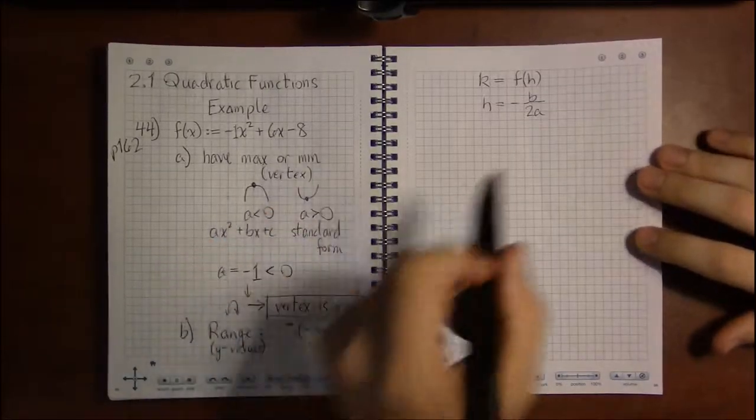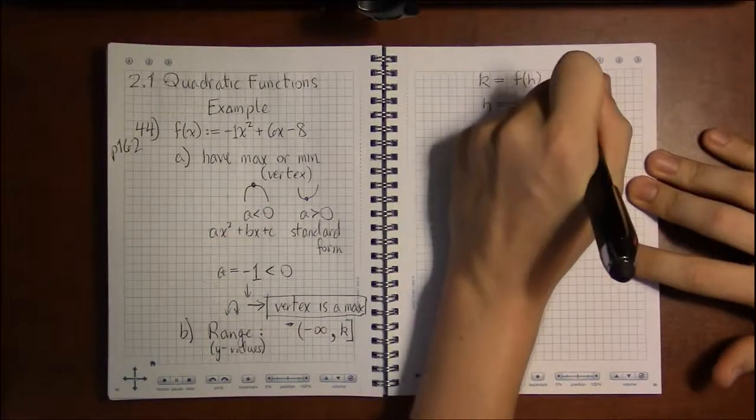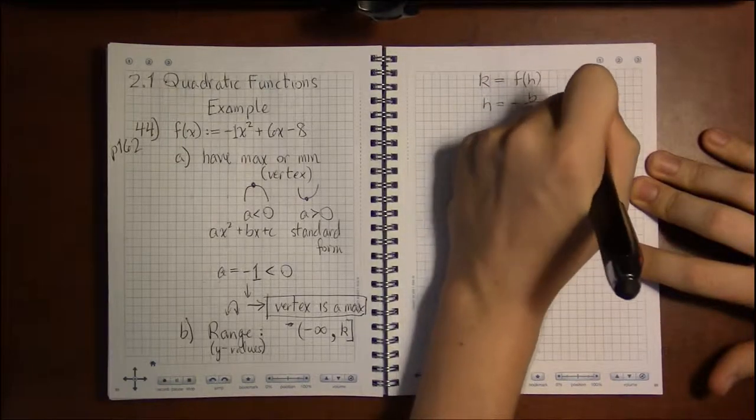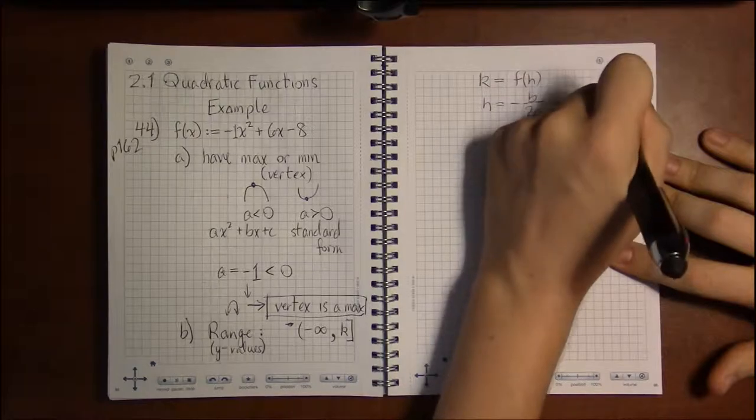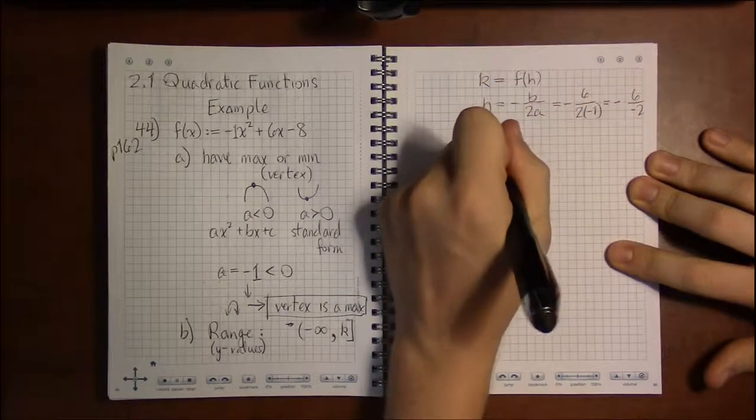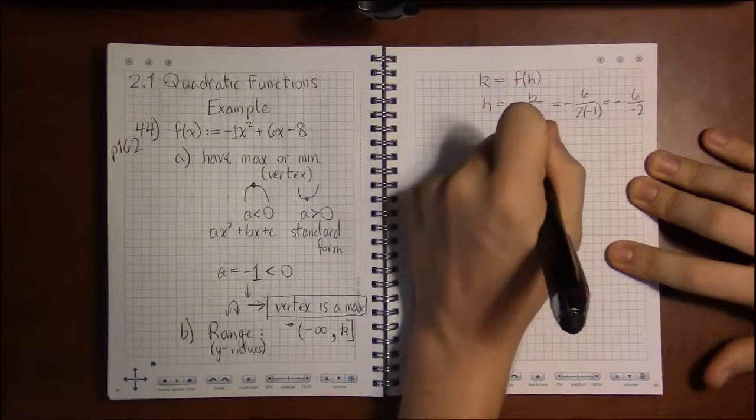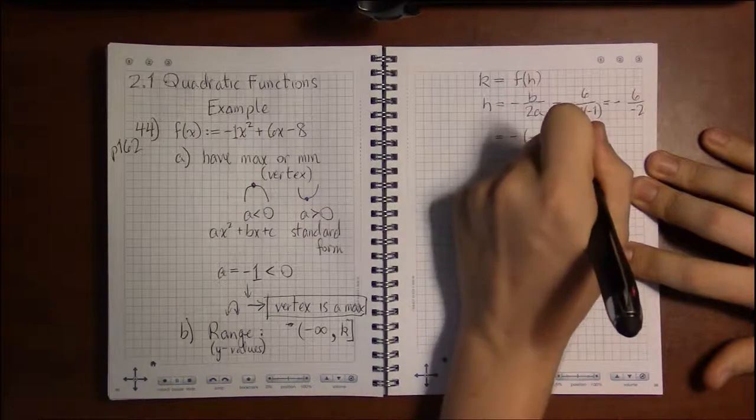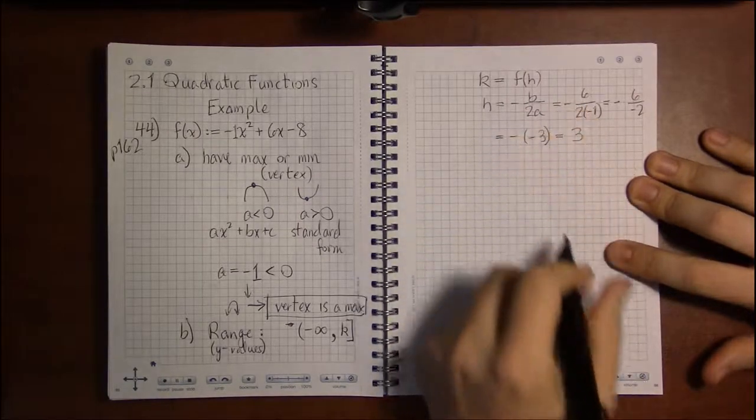Now b is 6 and a is minus 1, so we have minus 6 over minus 2, and that's minus a minus 3, so h is plus 3, or just 3.